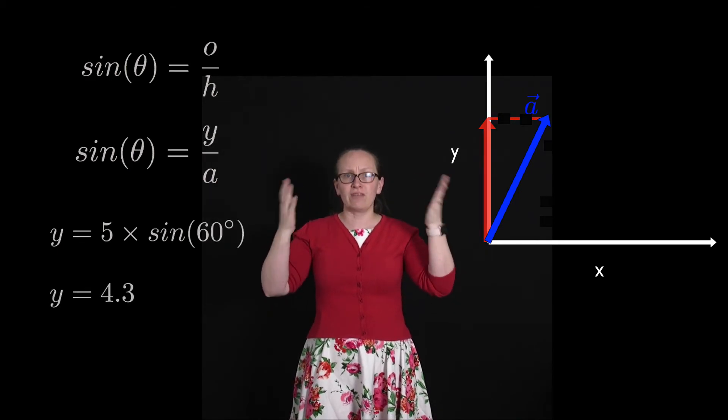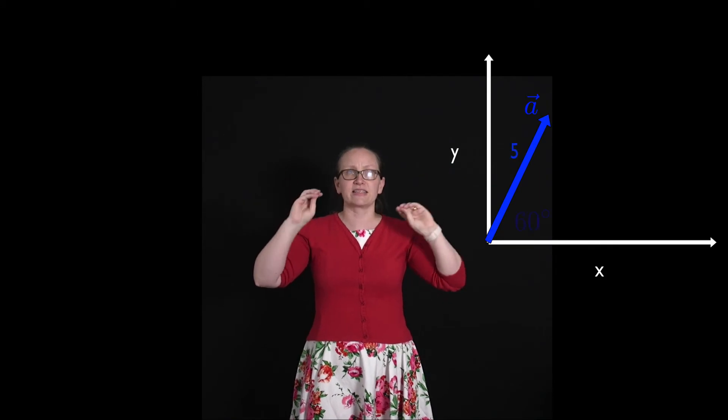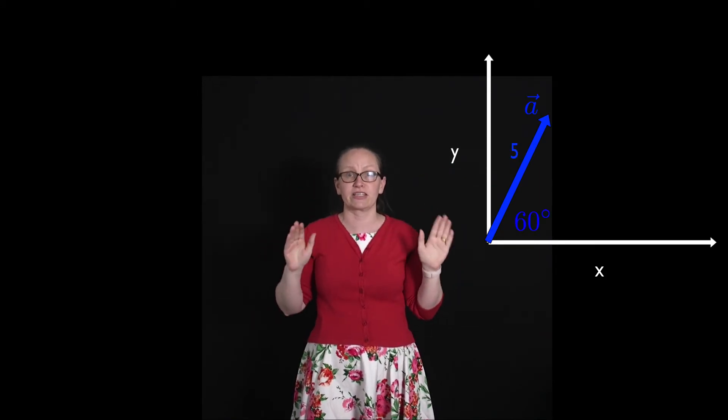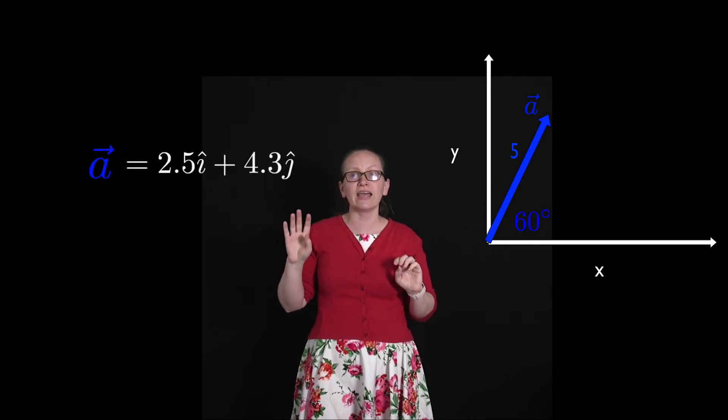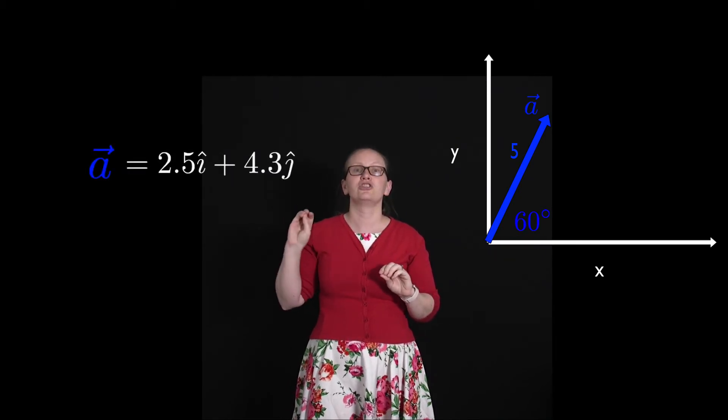So our vector, 5 meters, 60 degrees above the positive x axis, can be written in unit vector notation as 2.5i plus 4.3j.